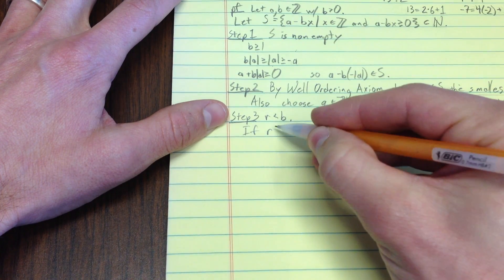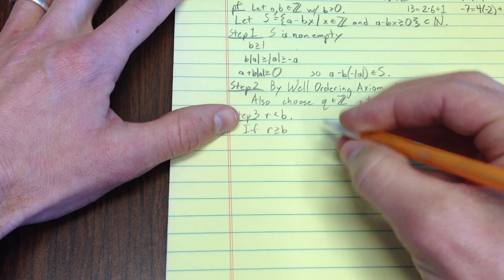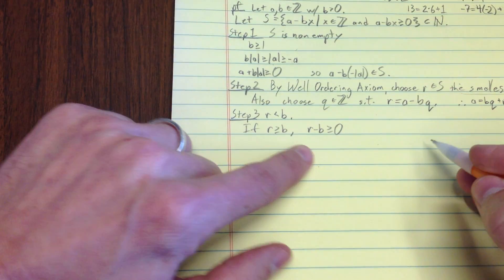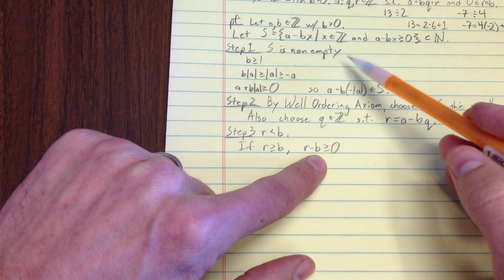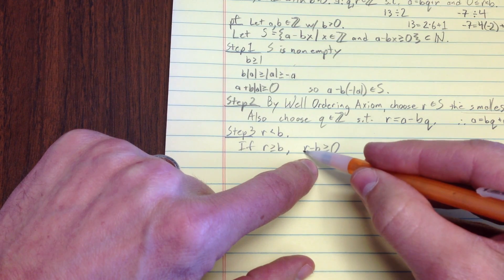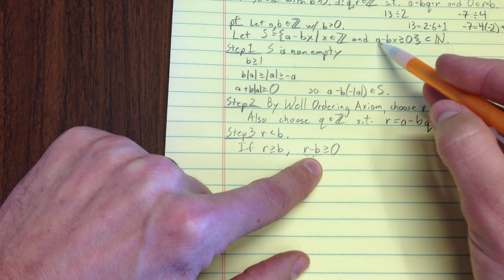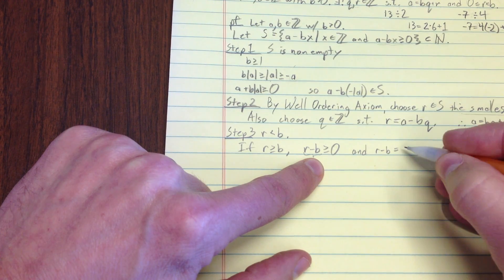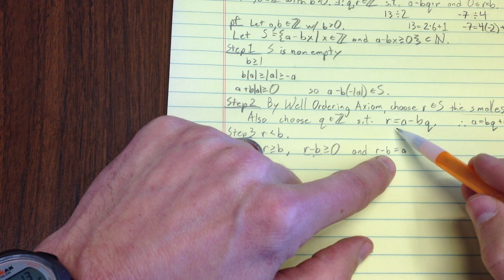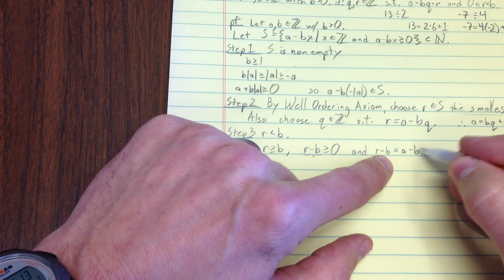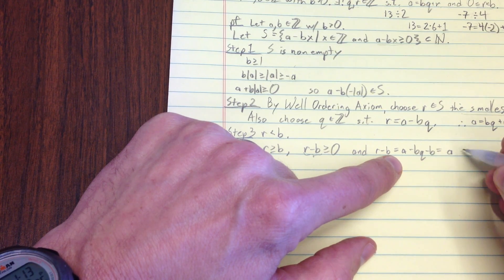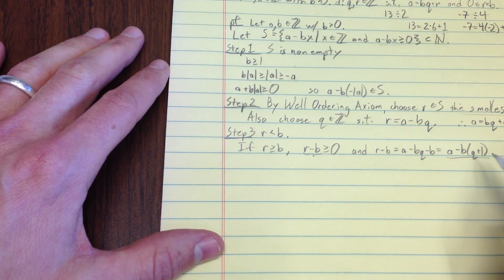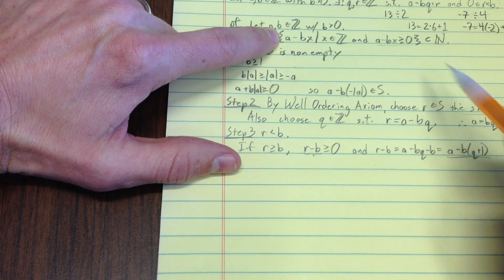Then my step four is going to be uniqueness. So, how do I show that? I say, if r is greater than or equal to b, then r minus b is greater than or equal to 0. Well, r minus b greater than or equal to 0 says, hmm, then r minus b is a candidate for satisfying this condition. And r minus b equals a, let's see, well, r was equal to a minus bq minus b, which equals a minus b times q plus 1. Then, well, being in this format means, hey, that's an element of s, as long as it's greater than or equal to 0.